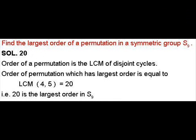Question 42: Find the largest order of a permutation in the symmetric group S9. The answer is 20. The order of a permutation is the LCM of its disjoint cycle lengths. The permutation with the largest order has order equal to LCM(4, 5), which equals 20. So 20 is the largest order in the symmetric group S9.